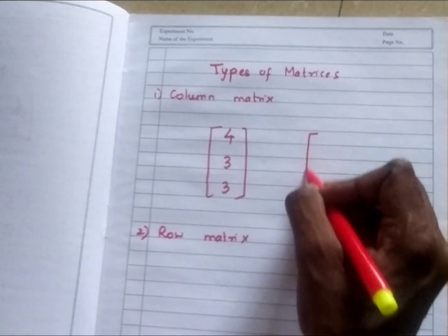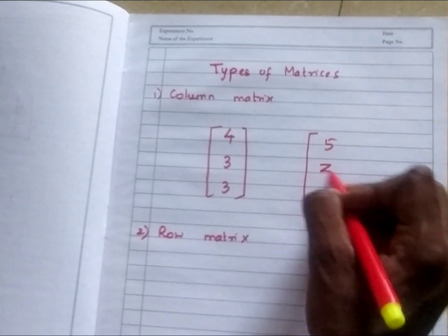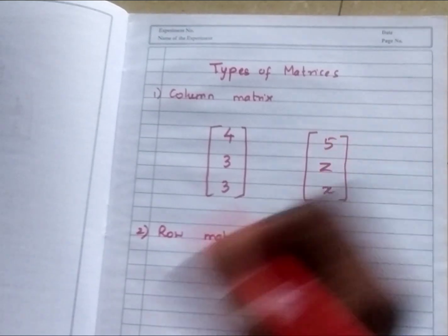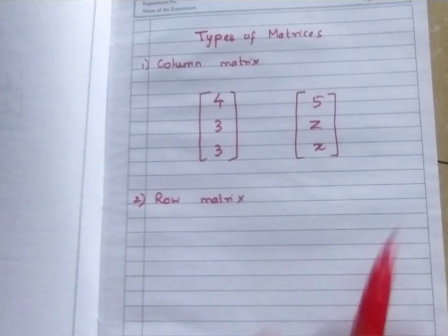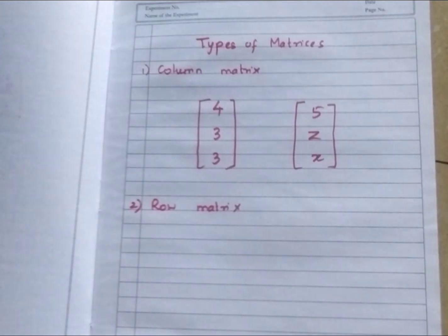Whatever number could be, say example 5, Z, X. These are all called as column matrix. Now write two more examples for column matrix.